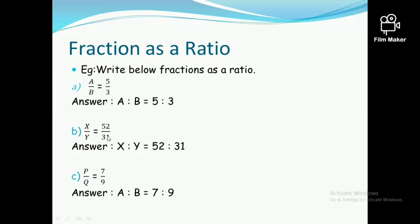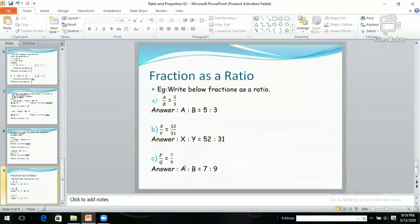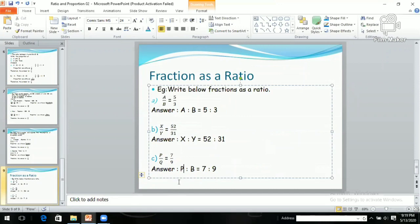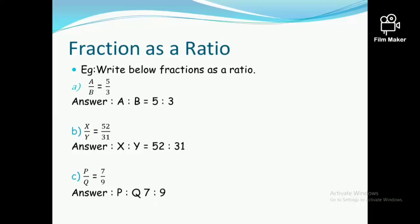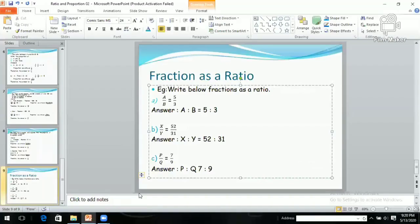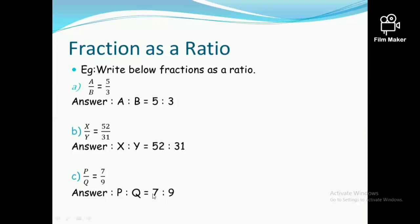If x divided by y is 52 upon 31, then x ratio y is 52 ratio 31. If p divided by q is 7 over 9, then p is 7 and q is 9, therefore p ratio q is 7 ratio 9.